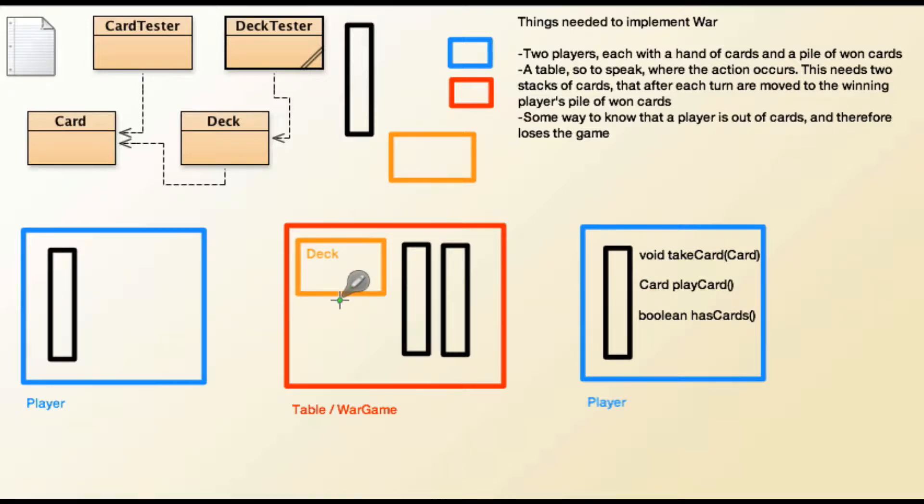Obviously both these player objects would have the same methods. So the deck class could call these methods, which would all be public by the way. The table class could call the takeCard method of this player. And that would send a card from the deck object in the table class over to add it to the array list. So that little green dot represents a card. And the deck class would have one less card in it.